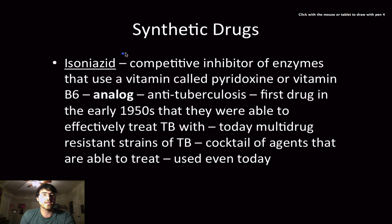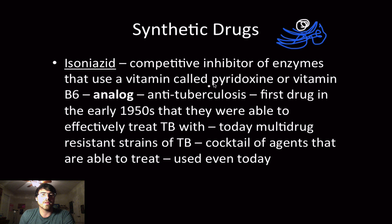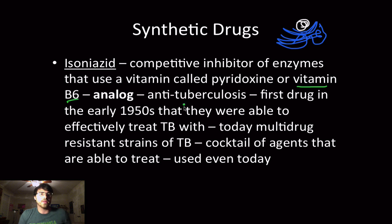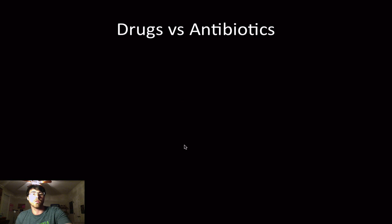Another form of synthetic drugs is isoniazid, which is a competitive inhibitor. It binds to the active site and inhibits the enzyme's activity. It's a competitor of enzymes that use a vitamin called pyridoxine — or vitamin B6 — and was really helpful in treating tuberculosis. Even today, with as much difficulty as we've had dealing with TB, we use this as part of a cocktail, and it was created a long time ago.